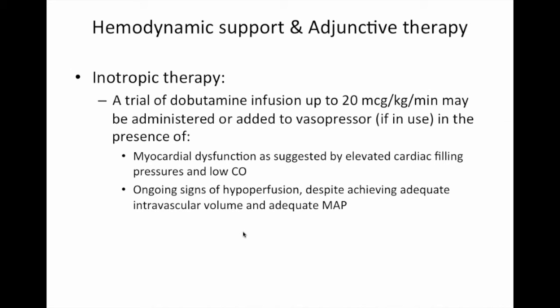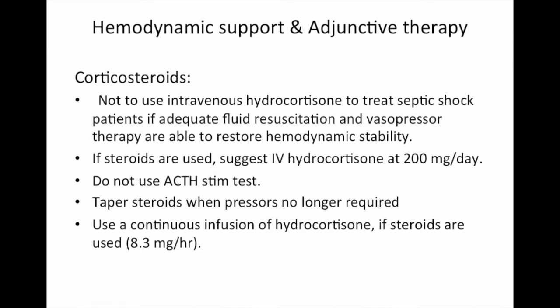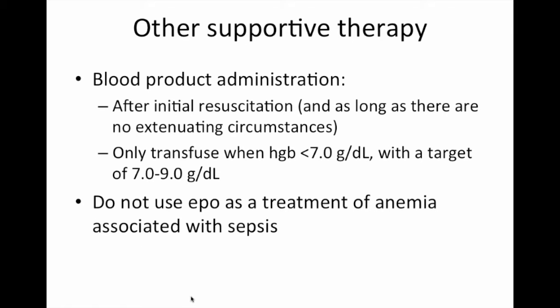A trial of an inotrope can be considered, but this is rarely done clinically and can often exacerbate hypotension. Corticosteroids are not used as routine therapy for patients with severe sepsis syndrome. We transfuse blood products only when the hemoglobin is less than 7, with a target of 7 to 9.